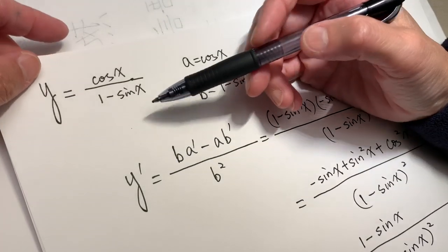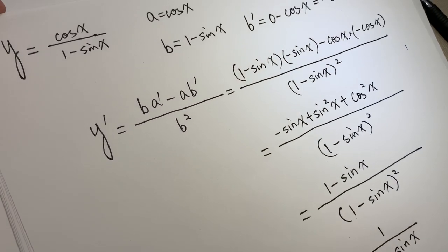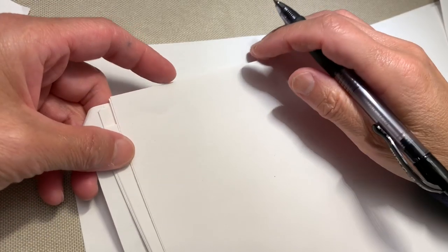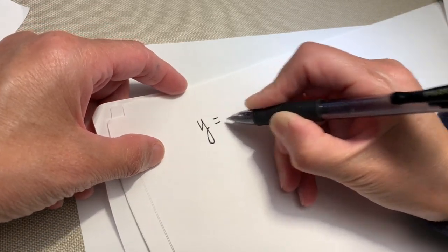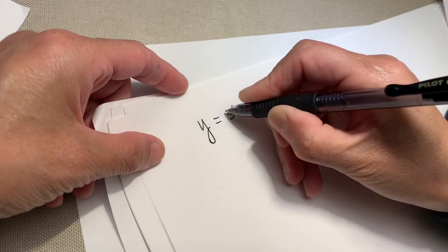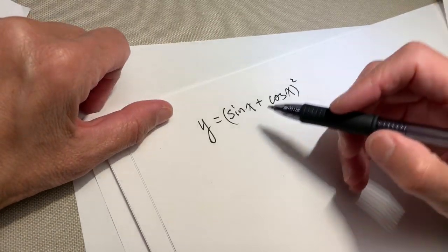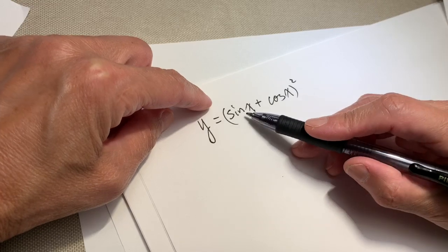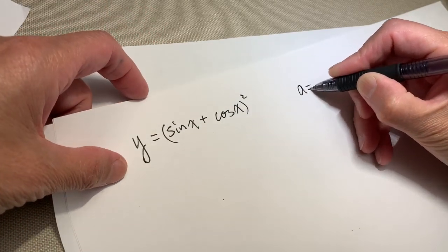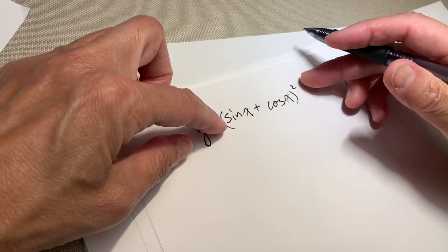And that is the derivative of this function. Thank you very, very much. So we have another problem. The problem is still trigonometry differentiation. Y equals (sine x plus cosine x) squared. I am thinking of treating this problem in two different ways. First, we can use the chain rule and take the complete expression as A. Let A equal to sine x plus cosine x.